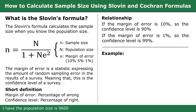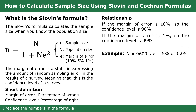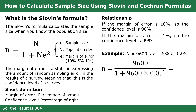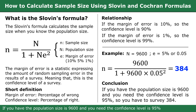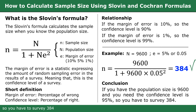Example: I have a population size of 9600, and I need the margin of error to be 5%. I substitute the numbers into the formula, so the result is 384. Conclusion: if you have a population size of 9600 and you need the confidence level to be 95%, so you have to survey 384.